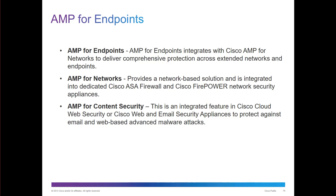We have AMP for endpoints, for network, and for content security. Content security includes integrated features in the Cisco cloud, such as web security or Cisco web and email security appliances. AMP for networking covers things like Cisco ASA firewalls or Firepower. For endpoints, it integrates with Cisco AMP for networks to deliver comprehensive protection across the extended network and all endpoints, including global ones.